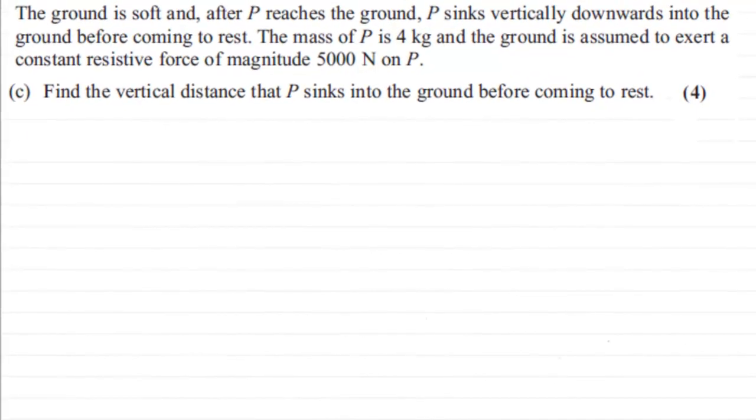Now in this last part we're told that the ground is soft and after P reaches the ground, P sinks vertically downwards into the ground before coming to rest. The mass of P is 4 kilograms and the ground is assumed to exert a constant resistive force of magnitude 5000 newtons on P. What we've got to do in this final part is find the vertical distance that P sinks into the ground before coming to rest.